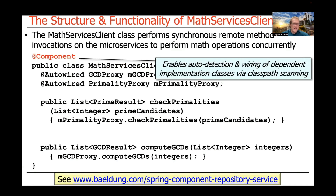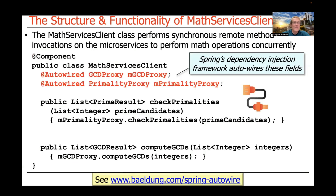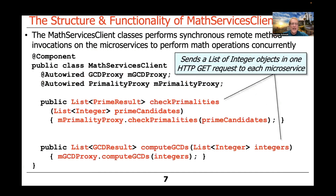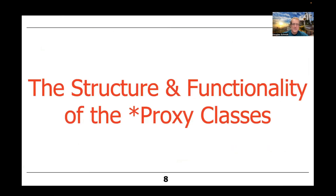We mark this as a component so it can be automatically handled with dependency injection and auto-wiring. We auto-wire the proxies to talk to the GCD microservice and the primality microservice, so we don't have to write that constructor code ourselves. Then we've got these two methods, checkPrimalities and computeGCDs, which basically just forward down to the underlying proxies.